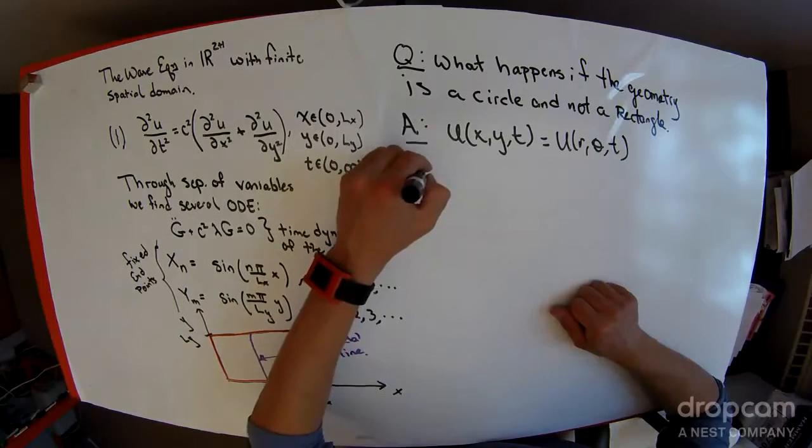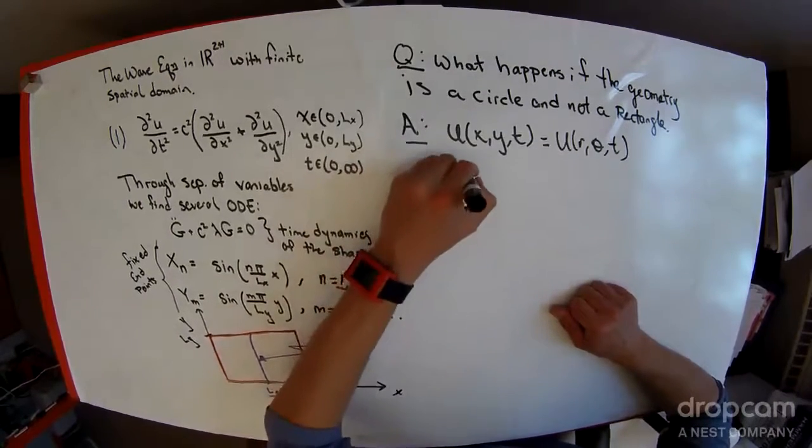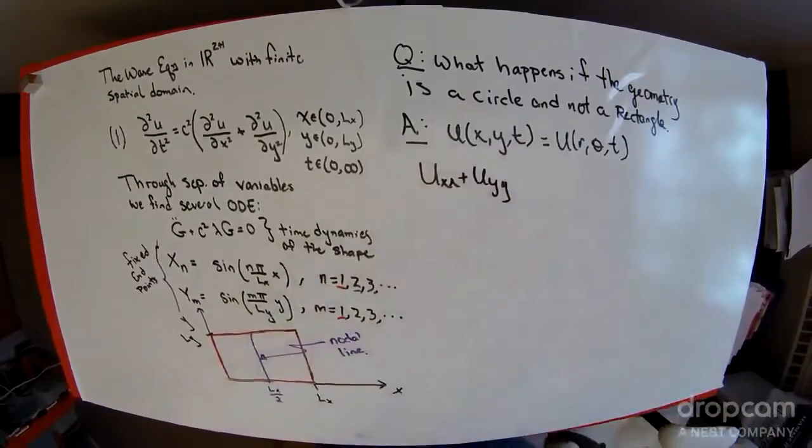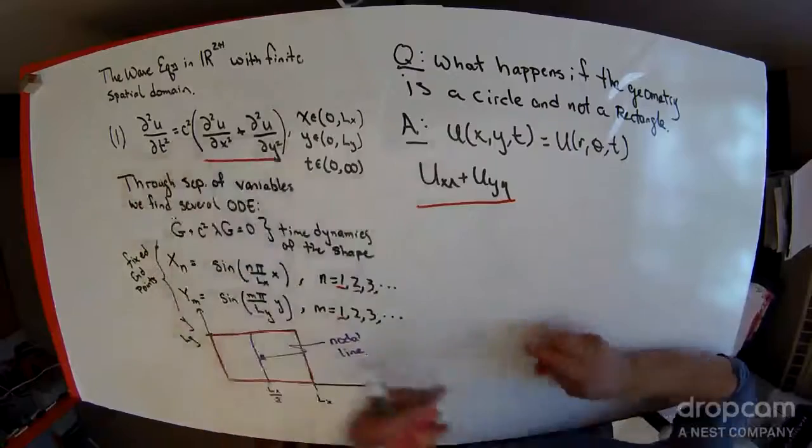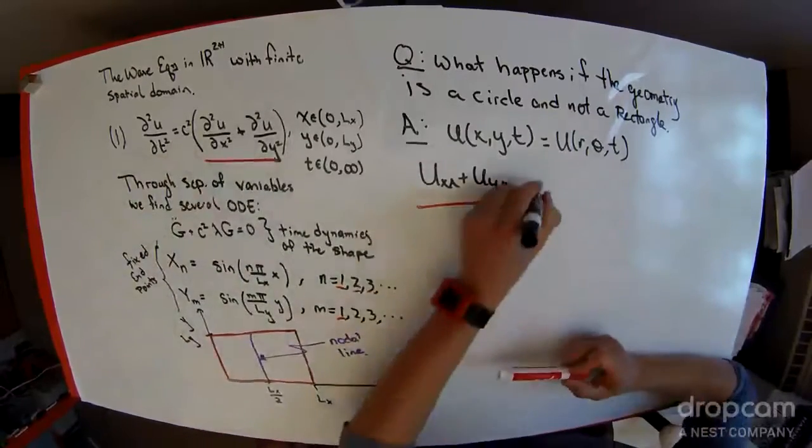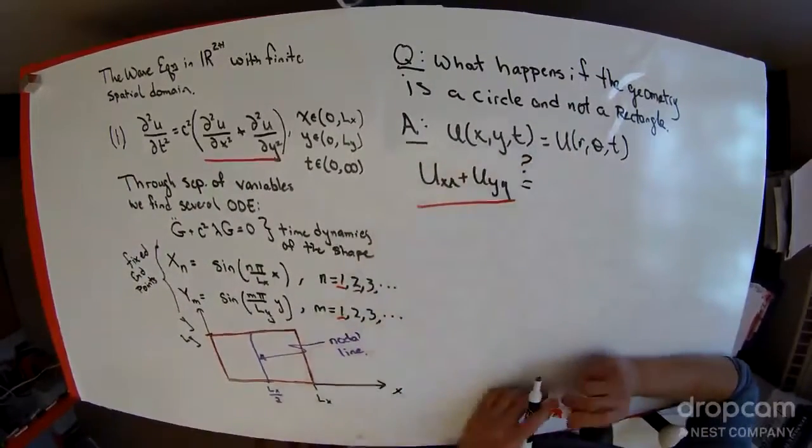So if I have u_x_x plus u_y_y, which is just the right hand side of this wave equation, the question comes up, what does this look like in polar?